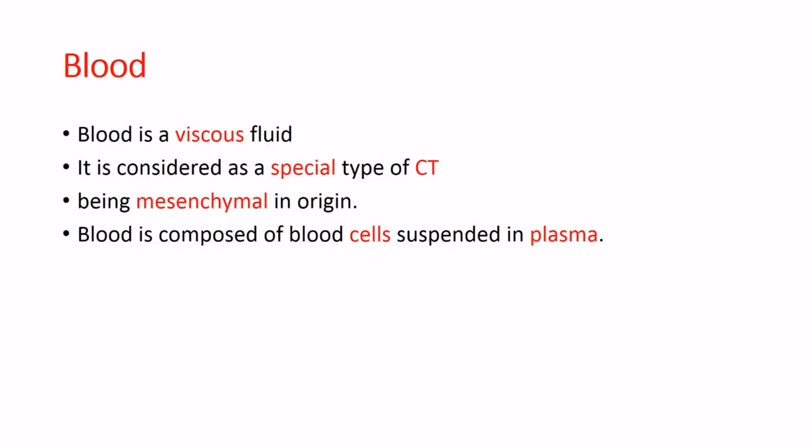Good morning, dear students. Today we will revise together the histological structure of RBCs and platelets. Blood is a viscous fluid, considered as a special type of connective tissue being mesenchymal in origin. Blood is composed of cells suspended in plasma.